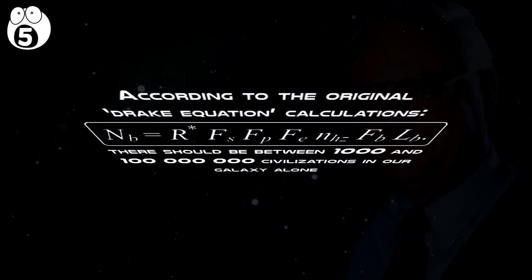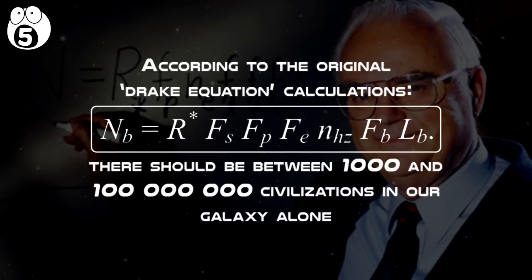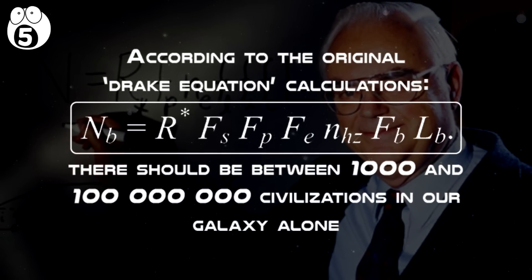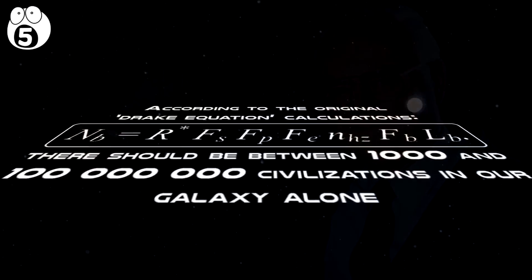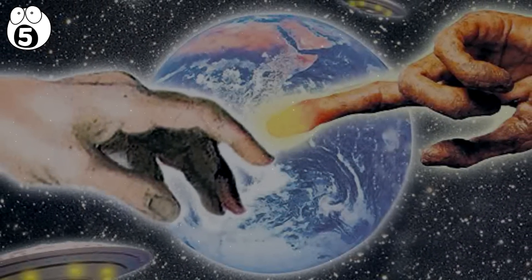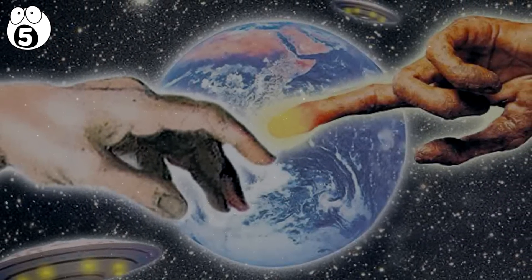This refers to a contradiction between the lack of evidence and the high probability of the existence of alien life. It is estimated that there should be between 1,000 and 100 million civilizations in our galaxy alone. But for some reason, we have not found them yet. The paradox has spawned a large number of theories as to why no alien life has been found.